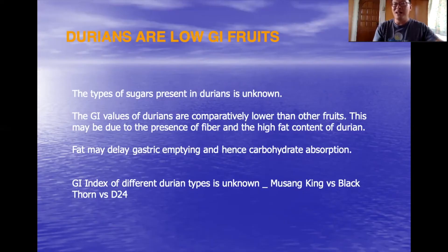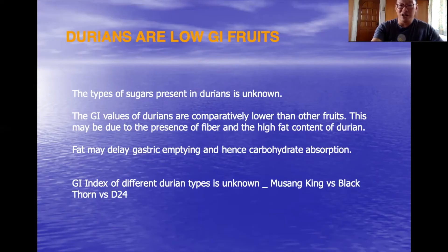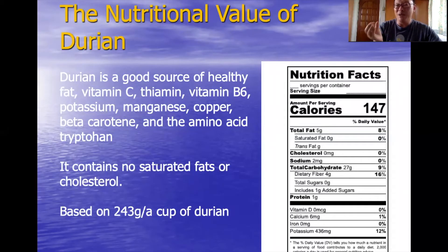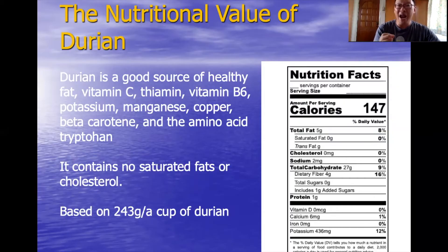No such study comparing different durian strains has been done, so we are still in the dark as to whether different durian types produce different GI responses. Regarding nutritional value, durian is a rich source of nutrients: it is a good source of healthy fats, namely monounsaturated fats, and is high in vitamin C, thiamine, vitamin B6, potassium, manganese, copper, beta-carotene, and the amino acid tryptophan. Notably, durians contain no saturated fats or cholesterol.